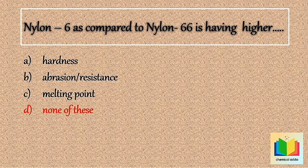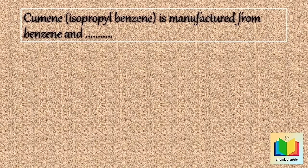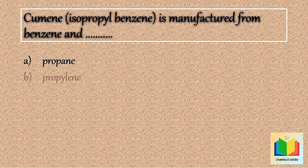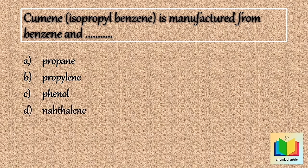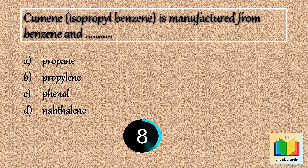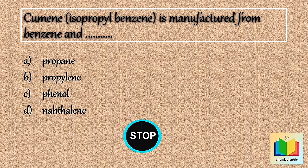Next question: Cumene (isopropyl benzene) is manufactured from benzene and — . Option A: Propane. Option B: Propylene. Option C: Phenol. Option D: Naphthalene. [10 seconds] So the answer is Option B: Propylene.